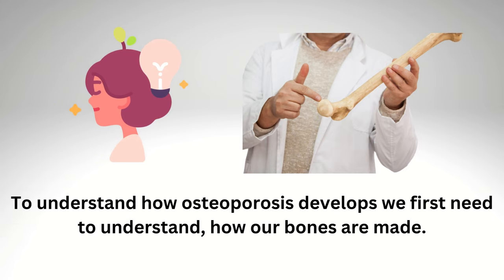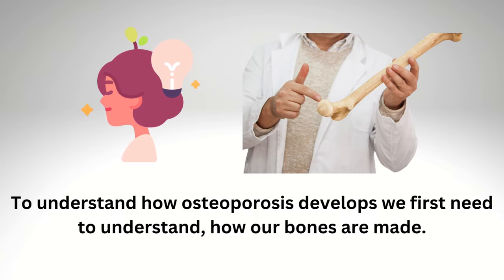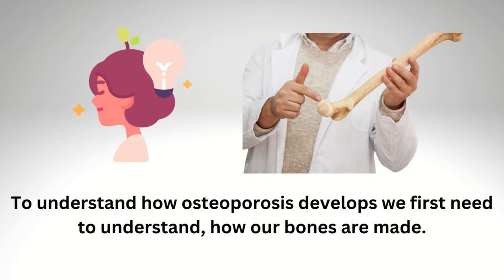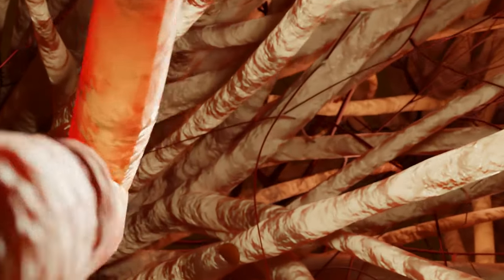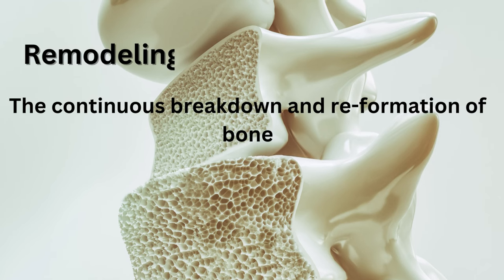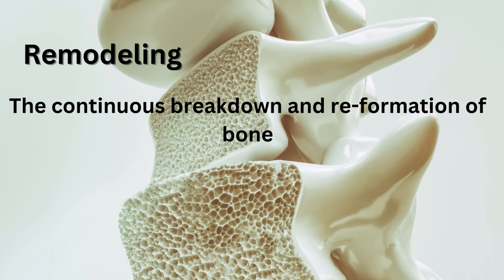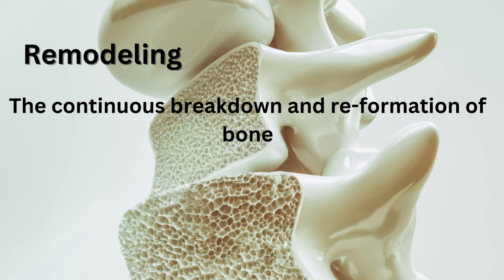To understand how osteoporosis develops, we first need to understand how our bones go through remodeling. Bone remodeling is a process by which older damaged bone is removed or chewed by cells called osteoclasts, and new bone tissue is replaced by cells called osteoblasts. Bone remodeling serves to adjust bone architecture, helps to repair micro-damages, and helps to maintain skeletal strength and integrity.